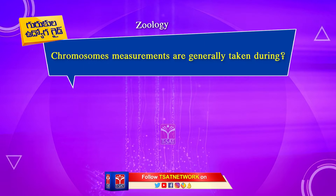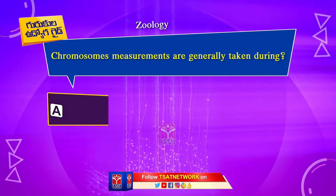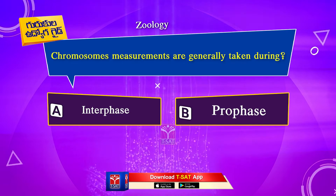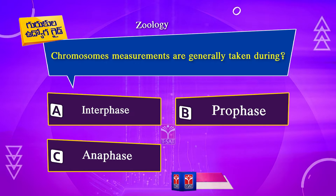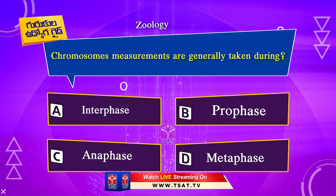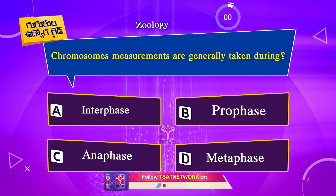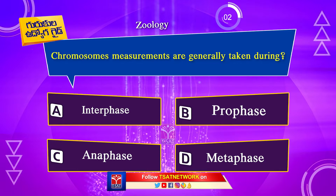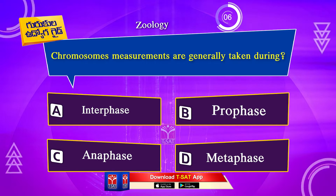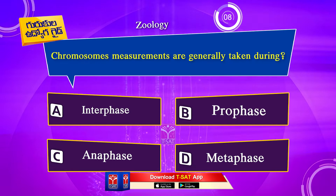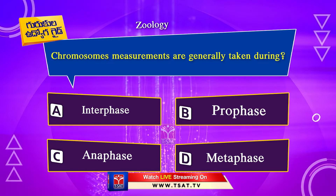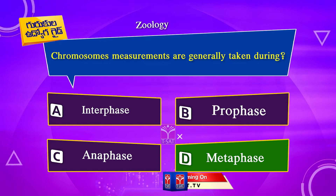Chromosomes measurements are generally taken during: Option A. Interphase. Option B. Prophase. Option C. Anaphase. Option D. Metaphase. The correct answer is Option D. Metaphase.